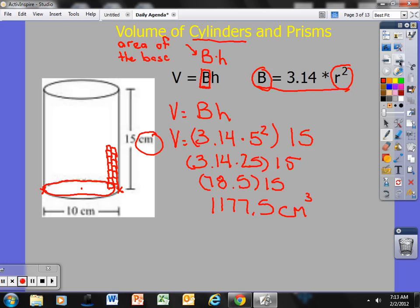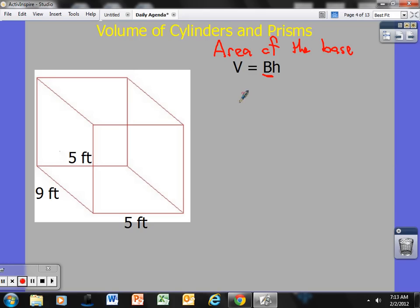If I take a look at the next shape, I have a rectangular prism. Same type of formula: volume equals base times height. This is a capital B, so it is the area of the base. I always think about the base as what that shape is sitting on. I see the three dimensions.